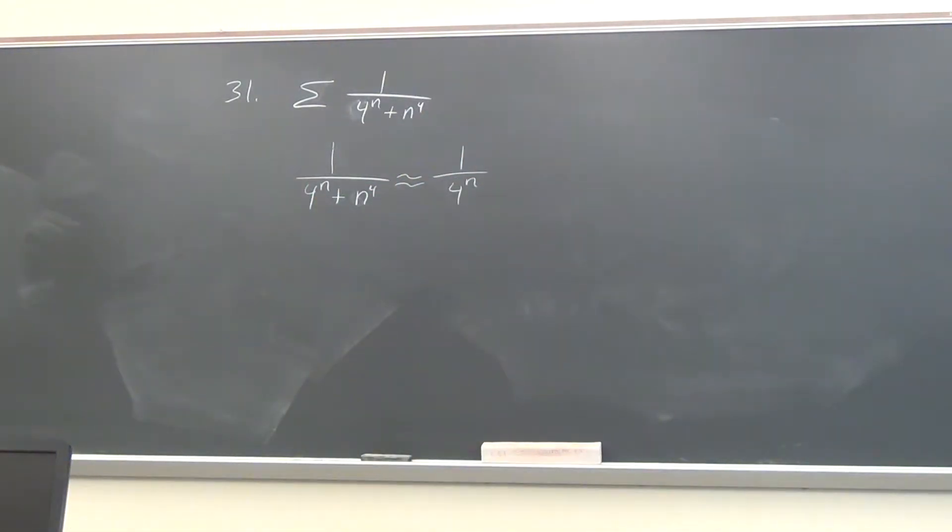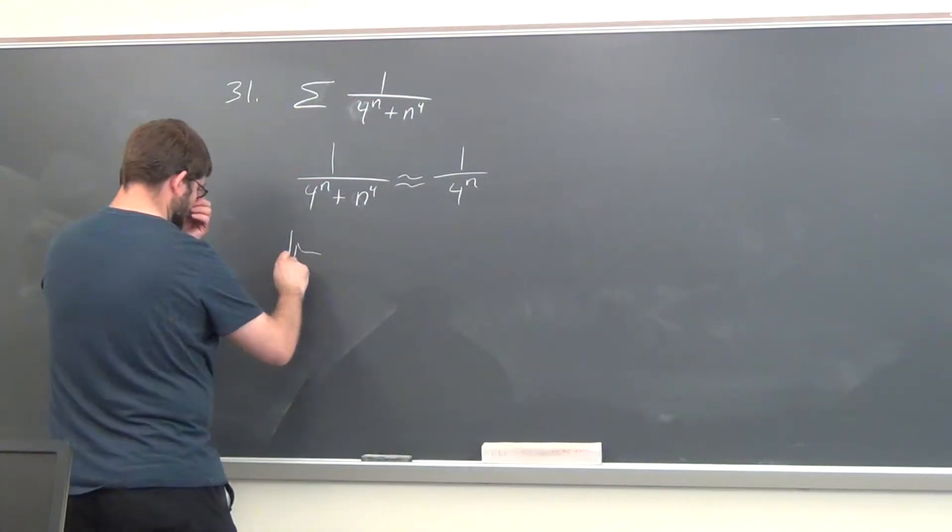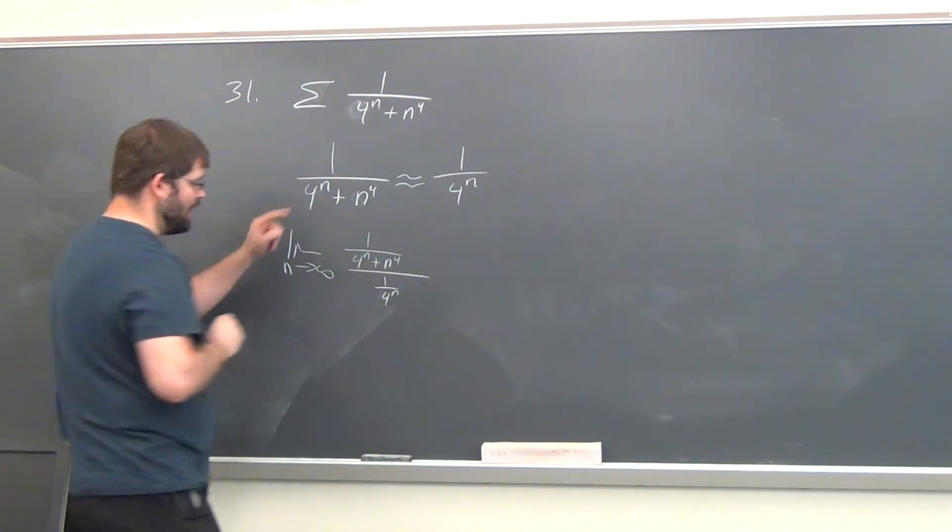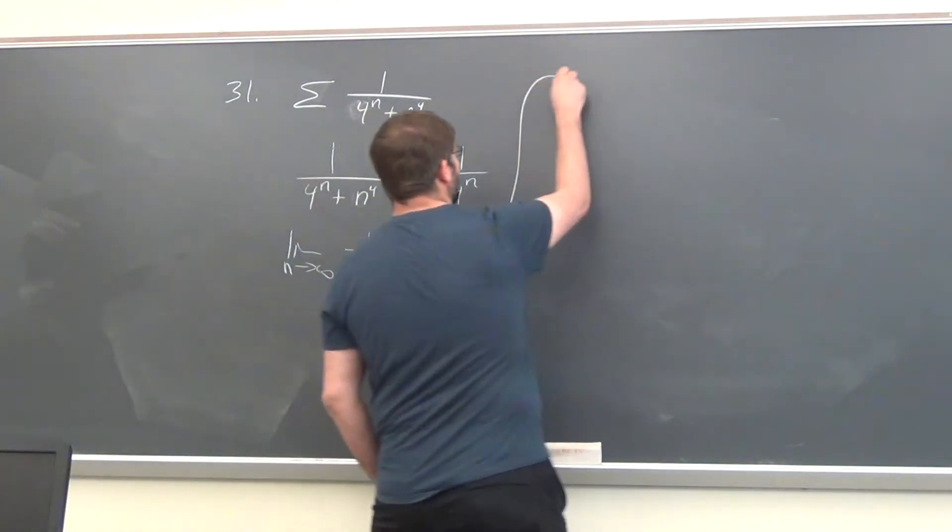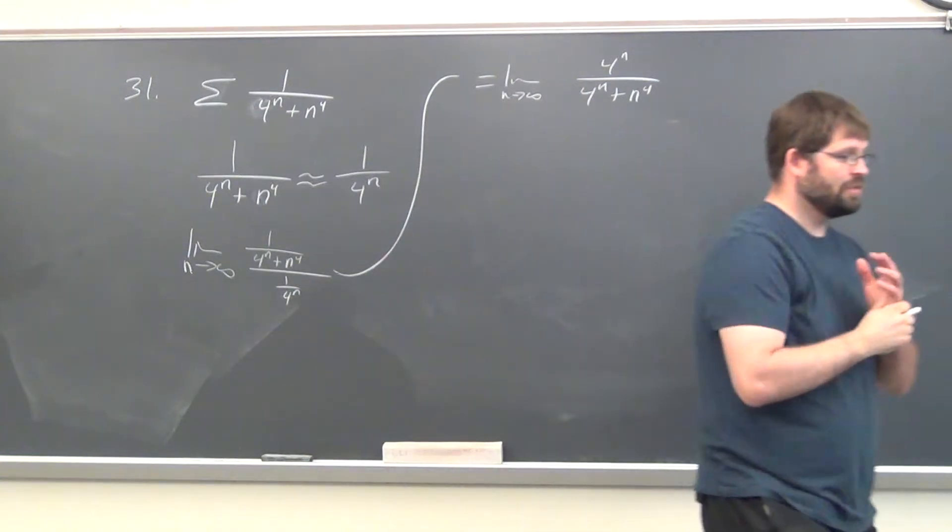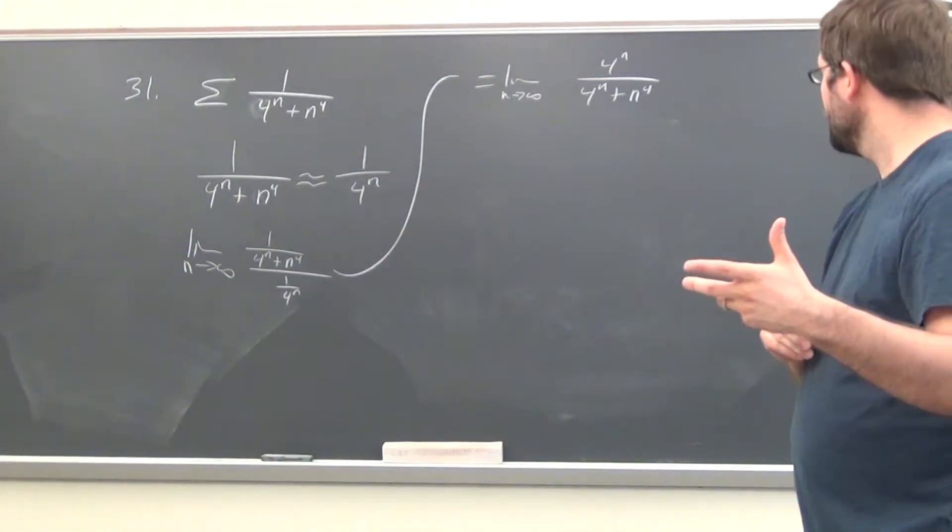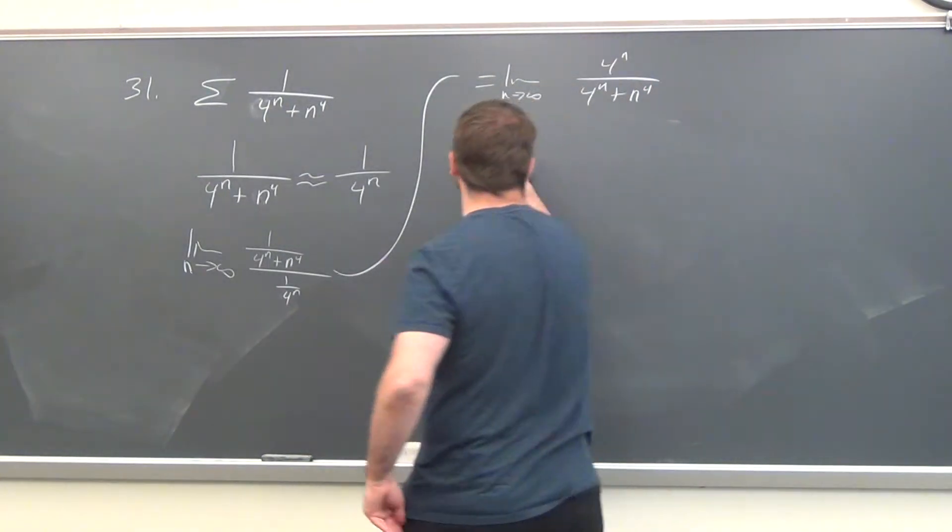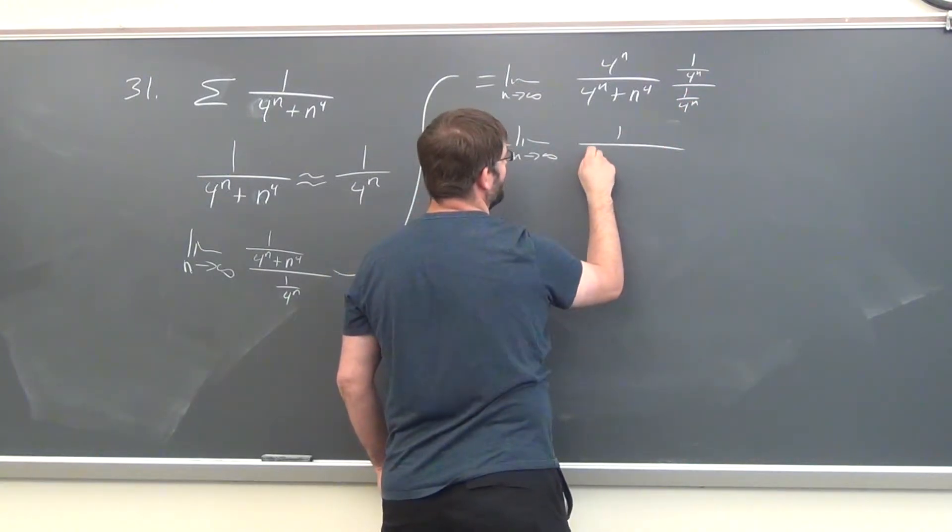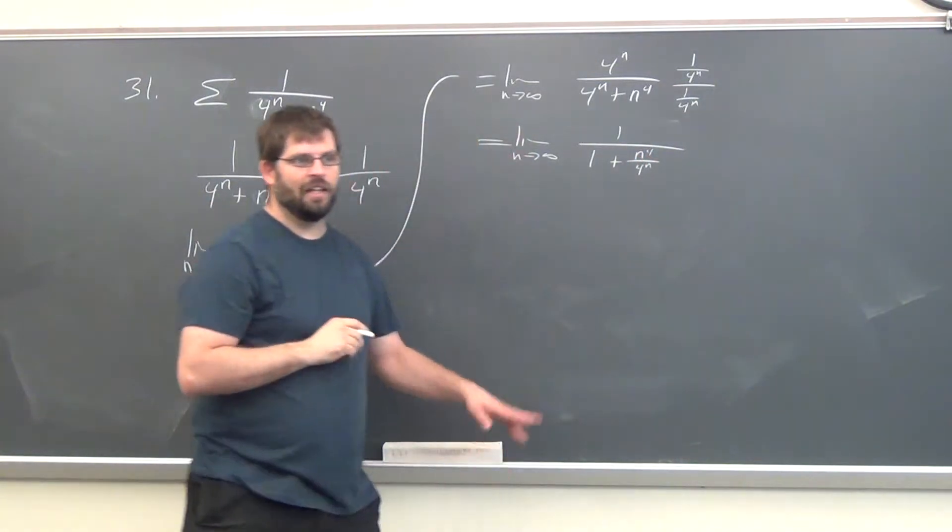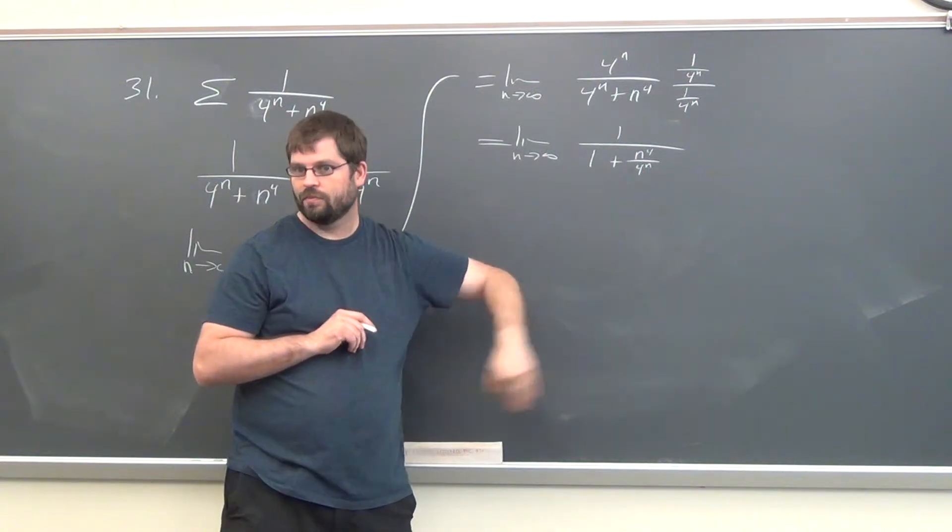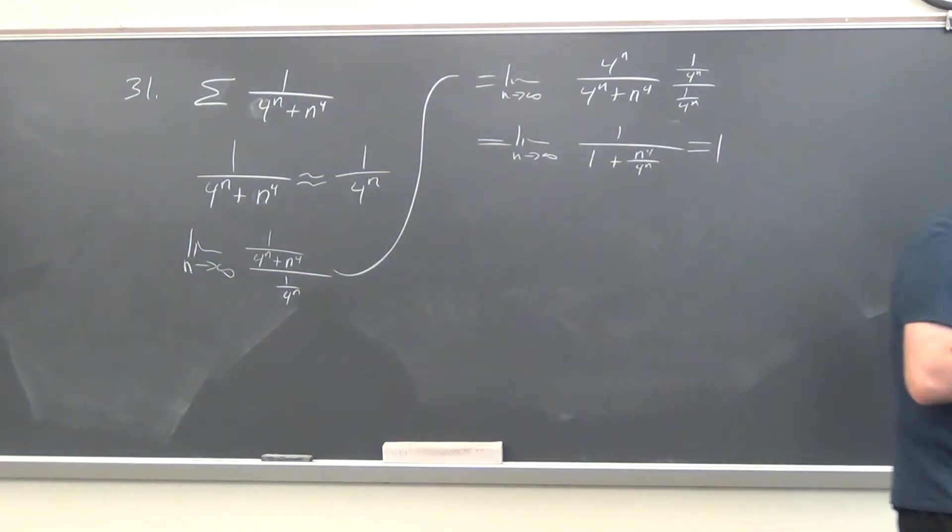We take the limit comparison test. We take the limit of the terms of the series we're asked about divided by the terms of the one we're comparing it to. At this point, you could just say you know that those exponential things are going to dominate the polynomial. So it's going to behave like 4 to the n over 4 to the n. If you wanted to show some work, you could do this game again, which would give you one up here, and then n to the fourth over 4 to the n. Polynomial divided by exponential goes to zero. So that whole thing goes to one.